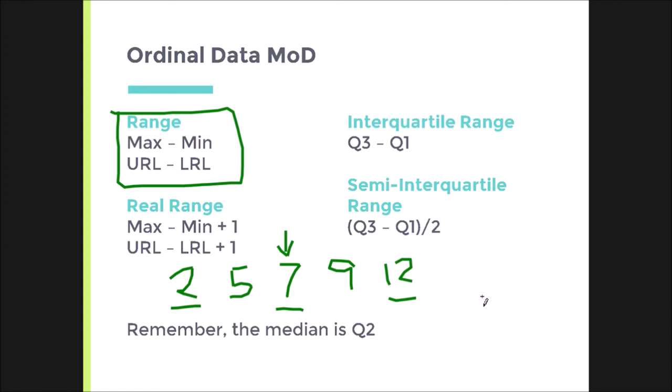If you count it out, you would realize there are actually 11 numbers from 2 to 12: 2, 3, 4, 5, 6, 7, 8, 9, 10, 11, 12 — that's 11 values. And that's what the real range tries to capture.